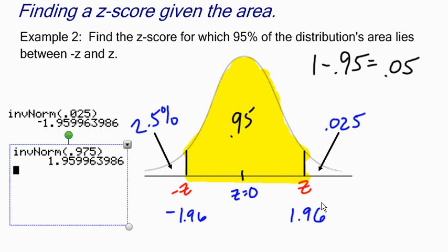So here's another example of how you can use the inverse norm function on your calculator to find z-scores when given the area under the curve.